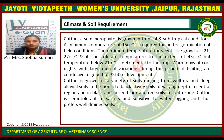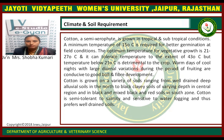Cotton is grown on a variety of soils ranging from well-drained deep alluvial soil in the north to black clay soil of varied depth in the central region, and black and mixed black and red soil in the south. Cotton is semi-tolerant to salinity and sensitive to waterlogging, and thus prefers well-drained soil.